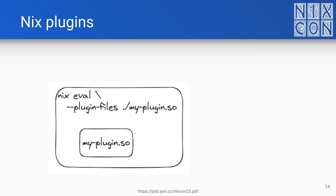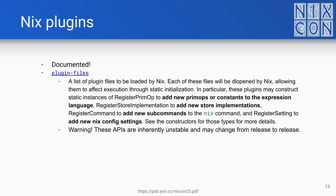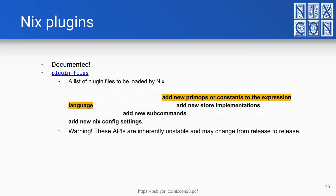There's a thing called Nix plugins, where you have a linked library, pass it to the Nix interpreter via the config file, and it loads this. Then you can modify the internal state and expose some built-ins. This is documented — it's from the manual. You can add new primops or constants to the expression language, meaning you can add functions to built-ins. You can add new store implementations, new subcommands, and Nix config settings. The manual warns that these APIs are inherently unstable and may change from release to release. Well, I fixed that.